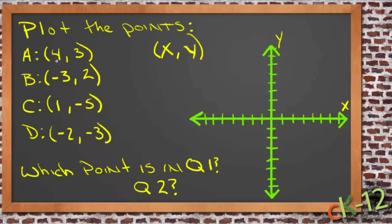So if our first point is at (4, 3), that means it's 4 over on the x-axis, 1, 2, 3, 4, and 3 up on the y-axis, since 4 and 3 are both positive. So this here is point A.